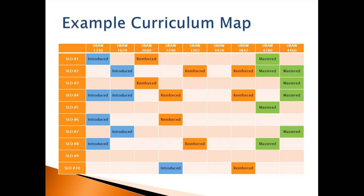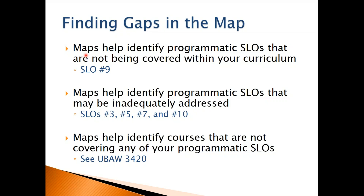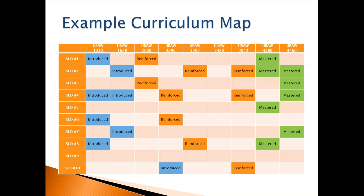How is a curriculum map useful? Maps are going to help you identify those programmatic student learning outcomes that are not being covered within your curriculum. Going back to the example map, we can see a programmatic student learning outcome that is not being covered — student learning outcome number nine. This is an example of a learning outcome that you think somebody else is teaching and they think you're teaching, and possibly a third person is teaching it, and no one is actually teaching it.